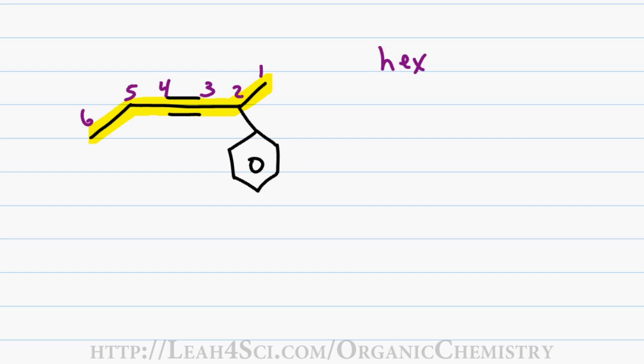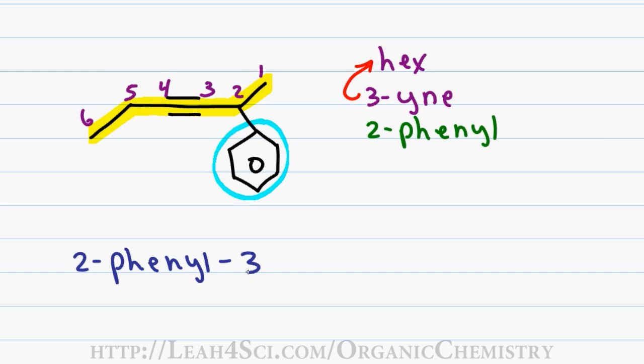A triple bond on the parent chain on carbon three gives me the last name of three-ine and a benzene substituent off carbon two gives me the prefix two phenyl. I can pull the number three in front of hex for a final name of two phenyl, three hexine.